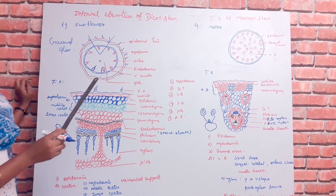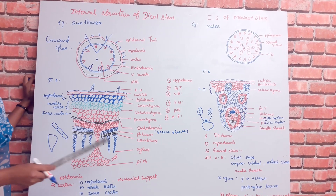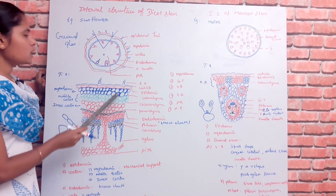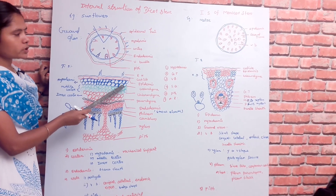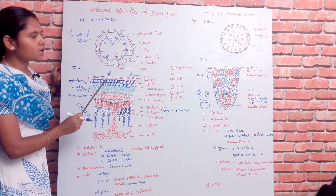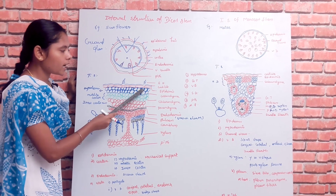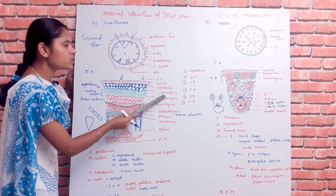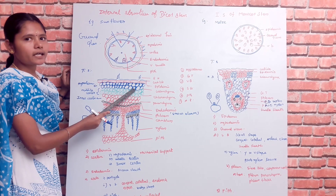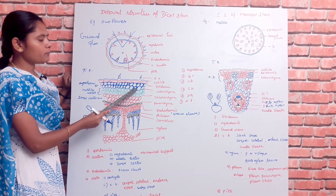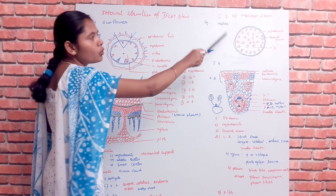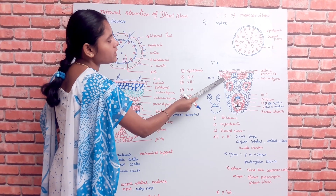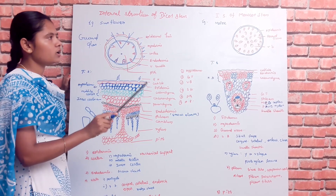Let's take a look at the whole diagram and compare. The first major difference is the hypodermis. In the dicot stem, the hypodermis is made up of collenchyma cells. In the monocot stem, the hypodermis is made up of sclerenchyma cells. This is the first difference.